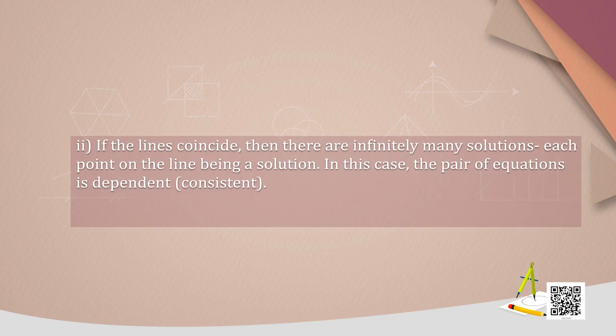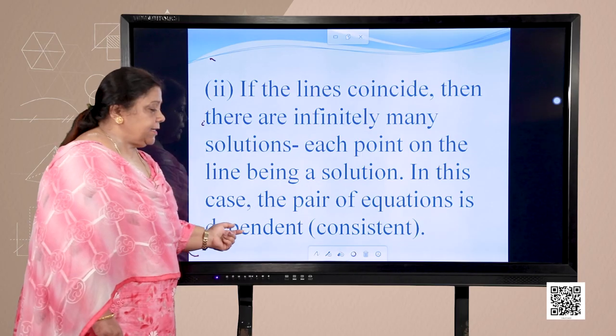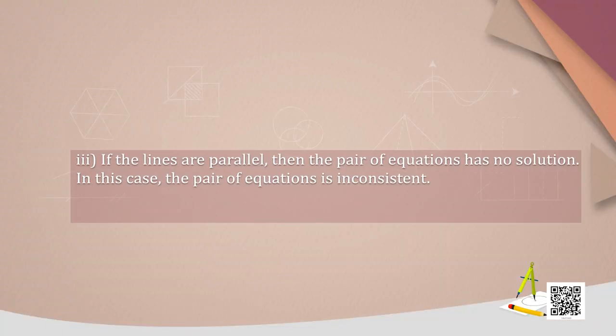If the lines coincide, then there are infinitely many solutions, each point on the line being a solution — the pair of equations is said to be consistent. In the third case, if the lines are parallel, then the pair of equations has no solution. In this case, the pair of equations is inconsistent.